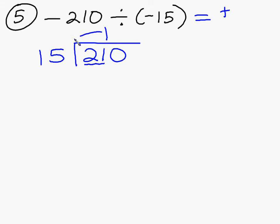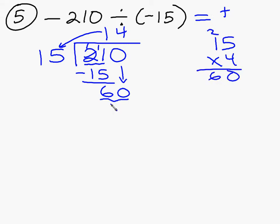So I put a 1 up here. 1 times 15 is 15 and I subtract. 21 minus 15 is 6. I bring down my 0. Now I ask how many 15s are in 60? And it is 4. And if you're not sure, just come over here and try it. 4 times 15 is 60. So I put the 60 there. I subtract and I get 0. My answer, is it positive or negative 14? Positive 14. So you will have some that you have to go back and do some long division on. Not that many, but there will be a few of them.